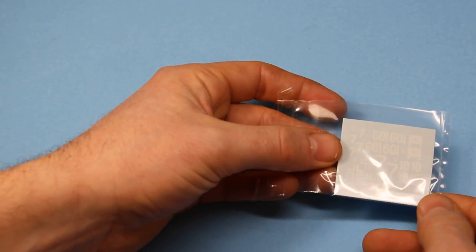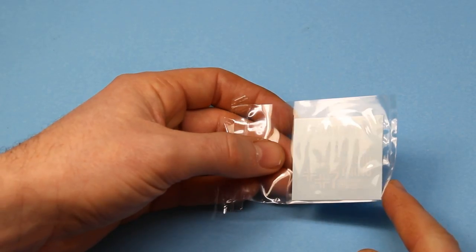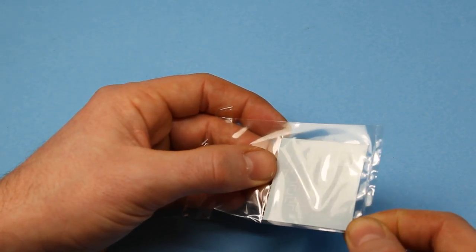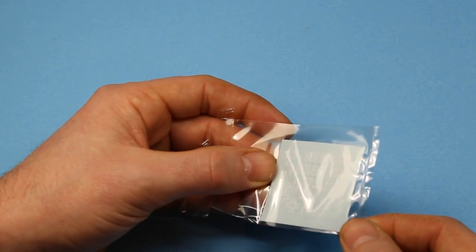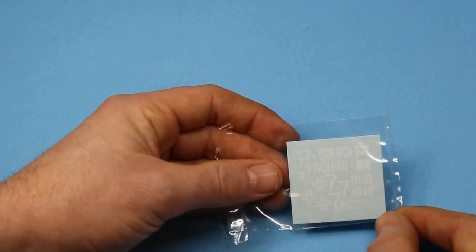Then we've got the decals which are just white numbers and tactical signs there, symbols. They're very nice, generally printed by Cartograph I can't quite see if that's written on there, but nonetheless Dragon decals are never a problem.